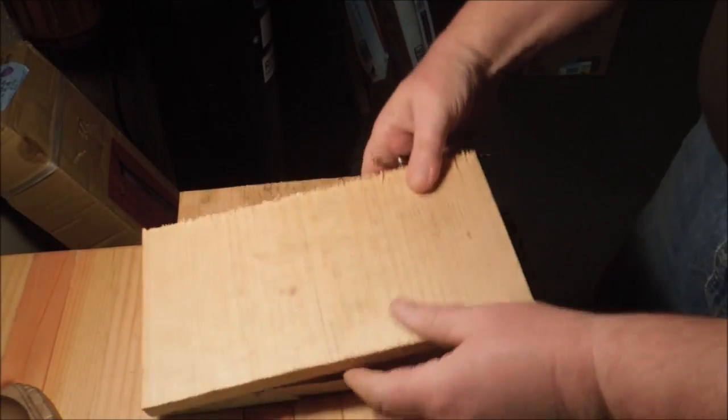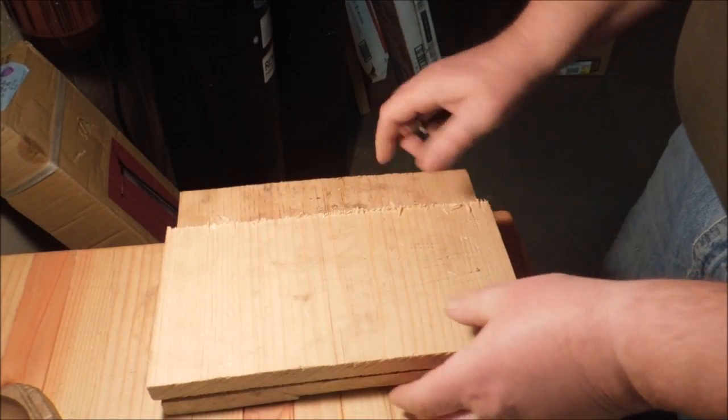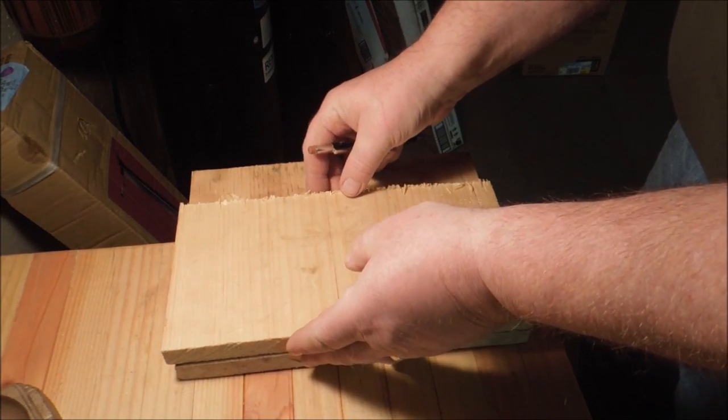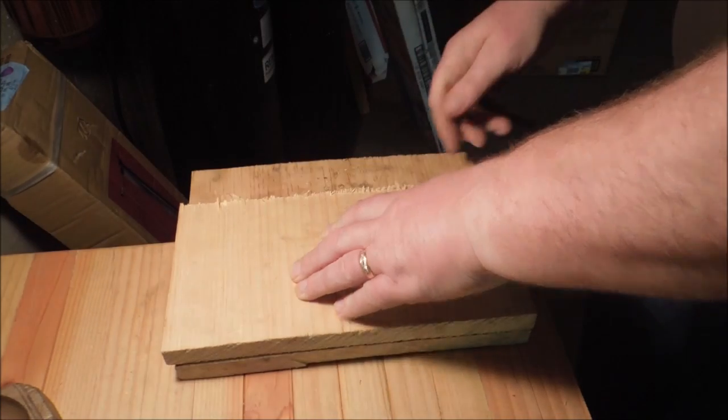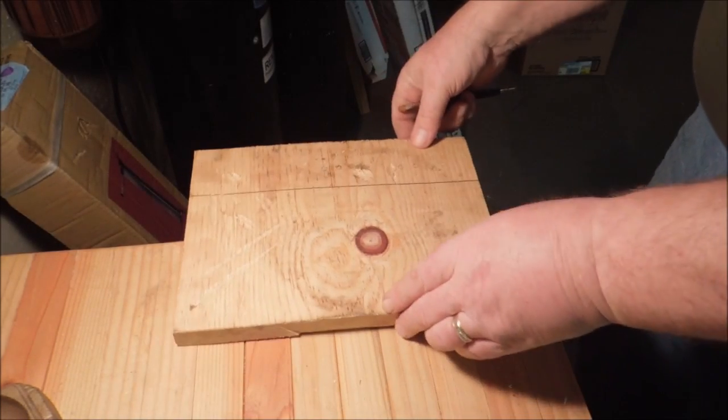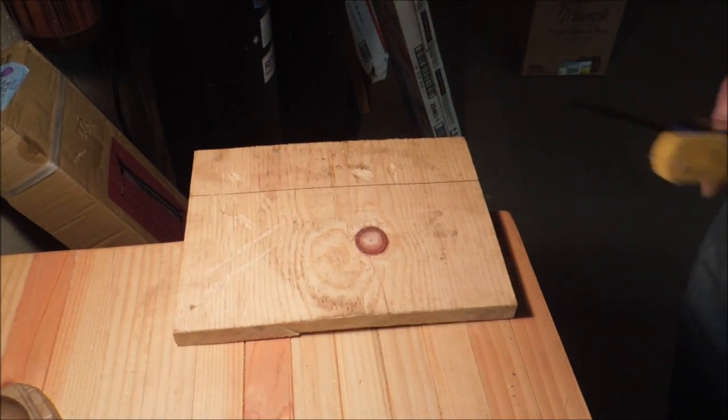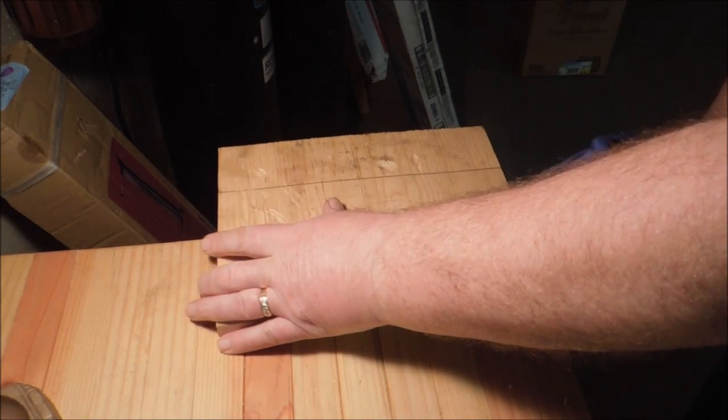I do not have a piece of 2x6 the size that I would like, so what I'm going to do is double up - laminate two pieces of 1x12 together.